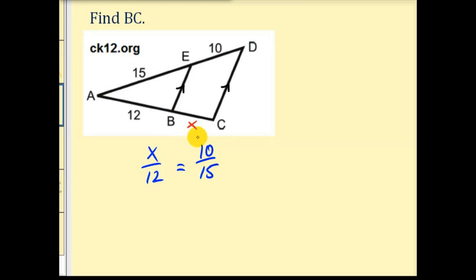So now to solve for X we can cross multiply. 15 times X would be 15X must equal 12 times 10. That's 120. Now we'll divide both sides by 15. So we have X equals 120 divided by 15 equals eight. So the length of BC is equal to eight units.